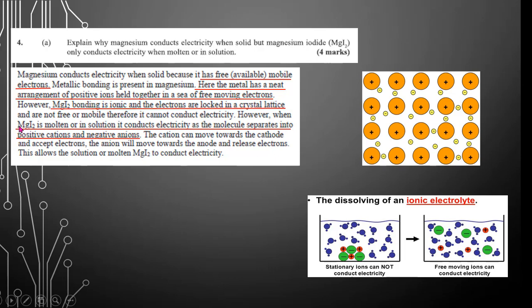However, when it is molten or in solution, it conducts electricity as the molecule separates into positive cations and negative anions. So looking at it here, when it is separate, the movement of ions is what facilitates the conduction of electricity.